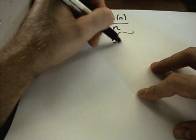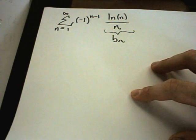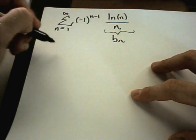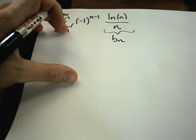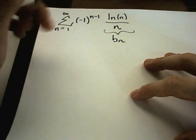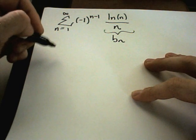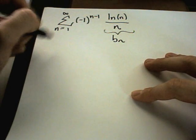So again here are our b sub n's. So again we have to show two things. We have to show that the limit as n goes to infinity is 0 and we have to show that it's decreasing. So again these two criteria are only enough when you have an alternating series so you have to be careful of that.